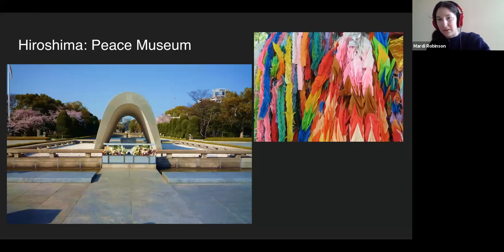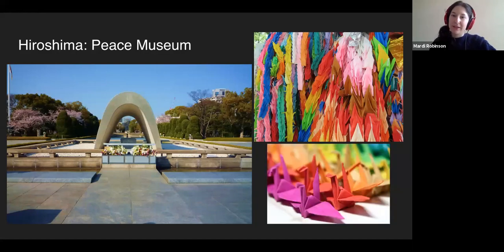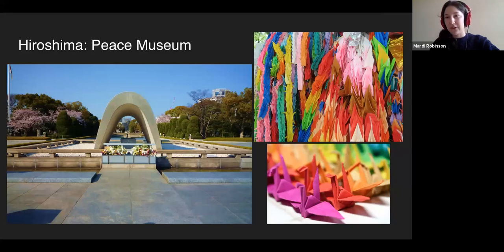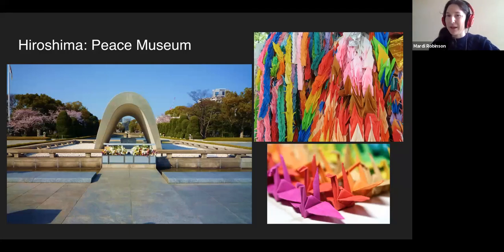You'll also see paper cranes at the museum. There's a story from the aftermath of the atomic bomb of a child named Sasaki Sadako. She was a child when the bomb went off, and eventually developed leukemia as a result. While deathly ill in the hospital, she tried to fold 1,000 cranes, in the belief that reaching 1,000 could help with recovery. Sadly, she didn't quite finish and she passed away on October 15, 1955, at just 12 years old.